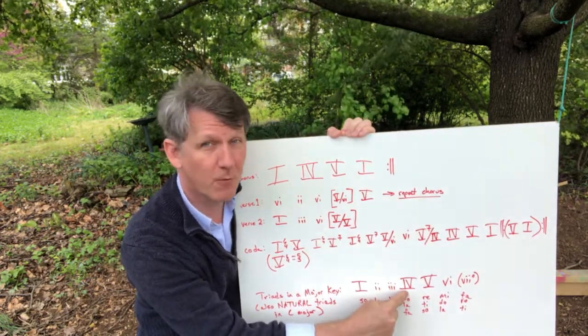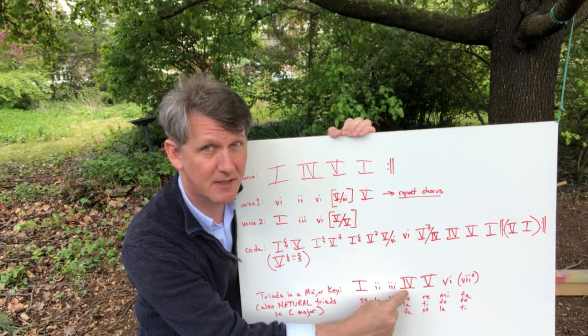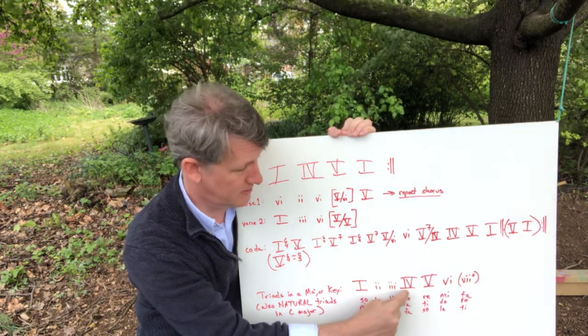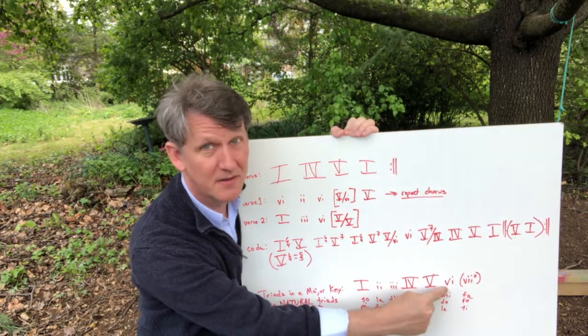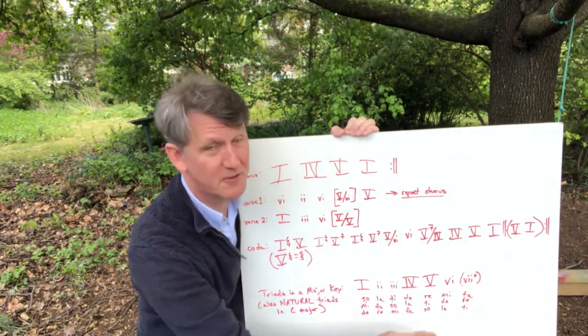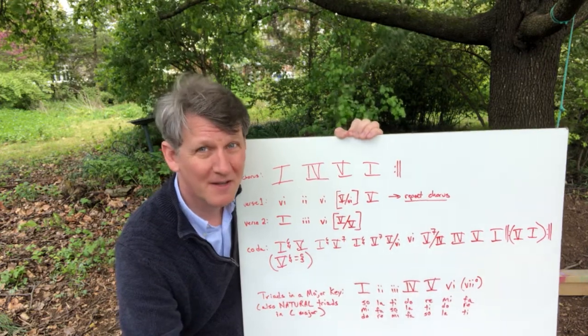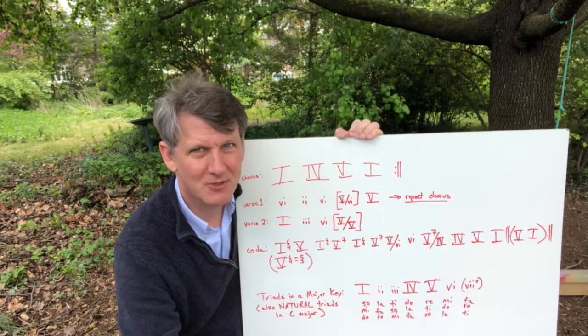The chord built on the fourth scale degree in a major scale is going to be major, fifth scale degree major, sixth scale degree minor, and the seventh scale degree is an oddball. It's going to be a diminished chord.